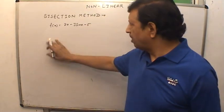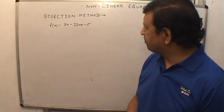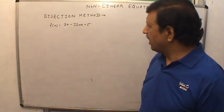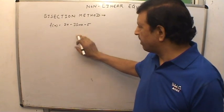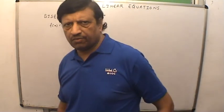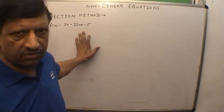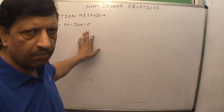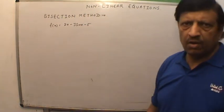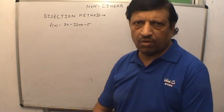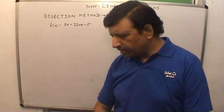Now we shall discuss how we go through this section. First, let's consider the bisection method. Take the function f(x) = 2x - 3sin(x) - 5. We want the exact value of x using the bisection method, say up to four decimal places or three significant figures, according to the requirement of the problem.